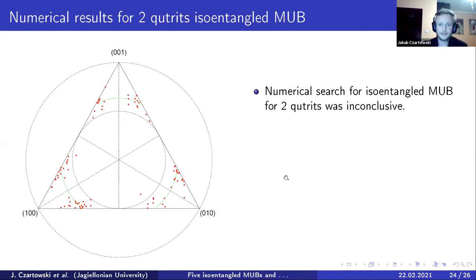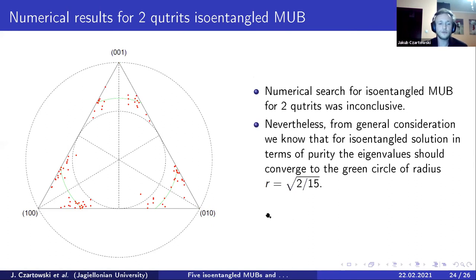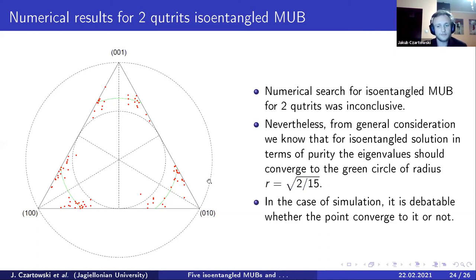However, as you can see, this doesn't really converge. What we know is that for it to be iso-entangled, we would require all the red points to converge onto the thin green circle, which is of radius square root 2/15th, with comparison to the outer circle, which is here scaled to be r equals one-half. And unfortunately, the simulations up till now have not been convergent.